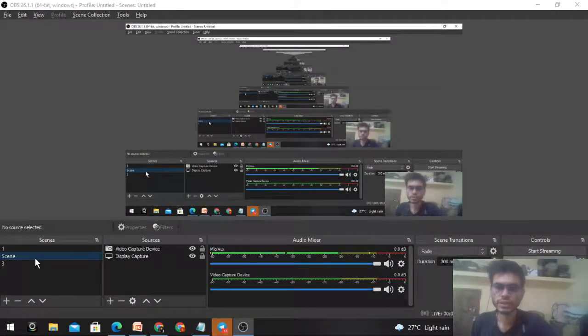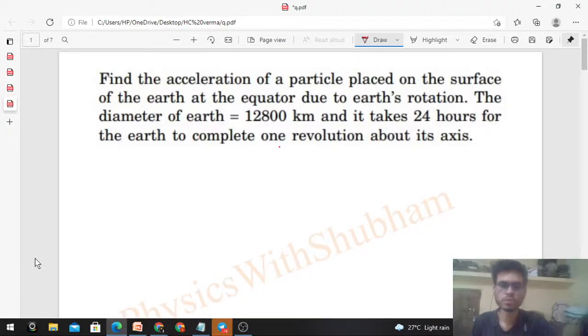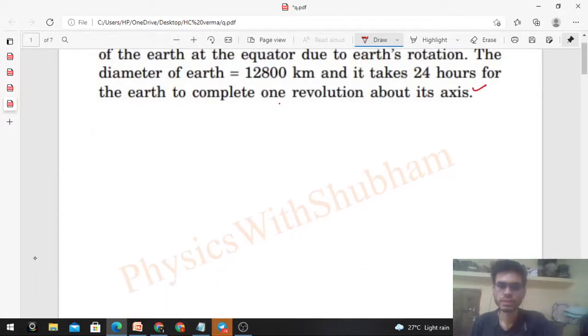Okay, hi everyone. Today let's discuss this interesting problem. What it says is: find the acceleration of a particle placed on the surface of earth at the equator due to earth's rotation. The diameter of the earth is given, and it takes 24 hours for the earth to complete one revolution around its axis.